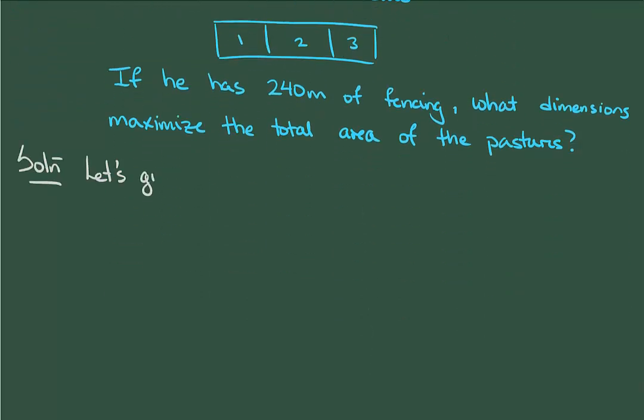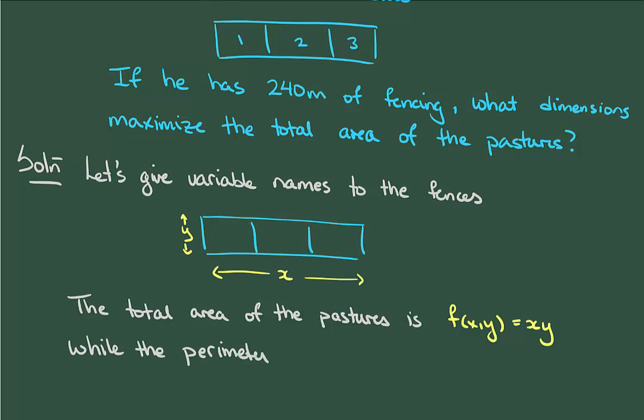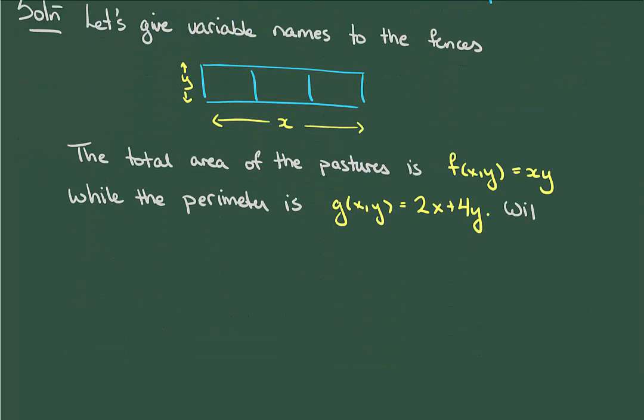The first thing we want to do is give variable names to the side lengths of the fences. Let's call the long side x and the short side y. The pastures as drawn just form a rectangle and the area of that rectangle is just x times y. The perimeter is a bit trickier, but not too bad. The pasture has two long sides and four short sides giving a total perimeter of 2x plus 4y. Assuming that we use all 240 meters of fencing, that means that 2x plus 4y is equal to 240. This is our constraint.